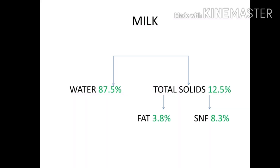Milk is generally classified into water and total solids. Water is 87.5% and total solids are 12.5%. Total solids are divided into fat and SNF. Fat is 3.8% and SNF is 8.5%.